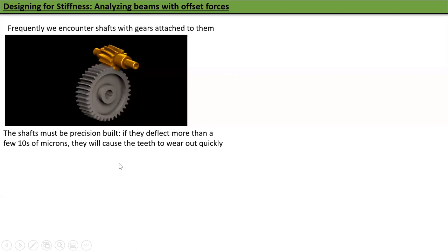The shaft for a gear must be precision built. If they deflect more than a few tens of microns, they will cause the teeth to wear out quickly. So shafts are usually high precision equipment for gears.